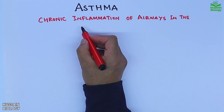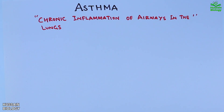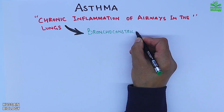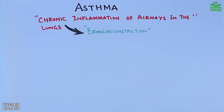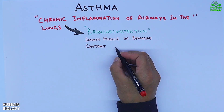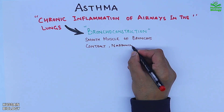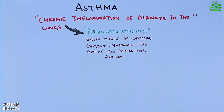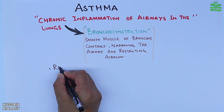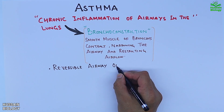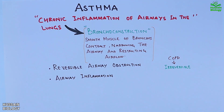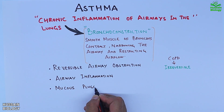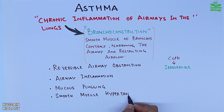Asthma is a chronic inflammation of airways in the lungs which leads to bronchoconstriction, where smooth muscles of the bronchus contract, narrowing the airways and restricting airflow. In asthma we see complications like reversible airway obstruction, airway inflammation, mucus plugging, and smooth muscle hypertrophy.